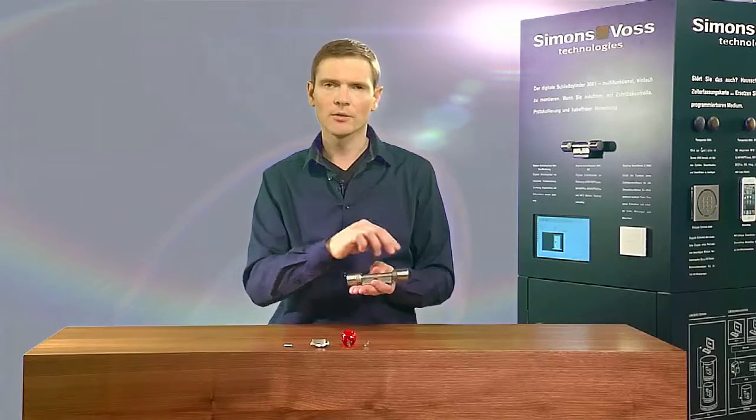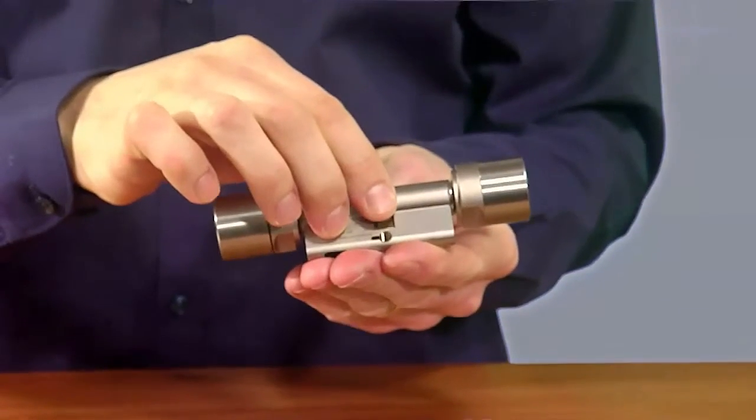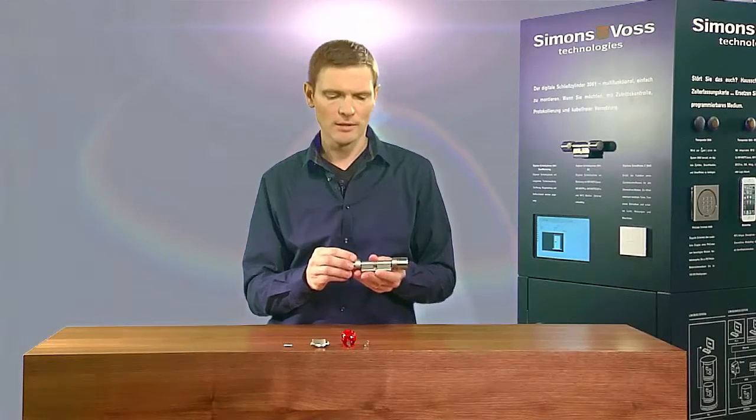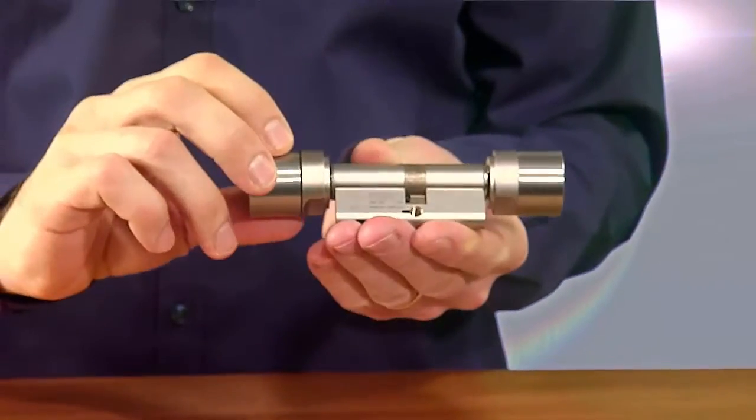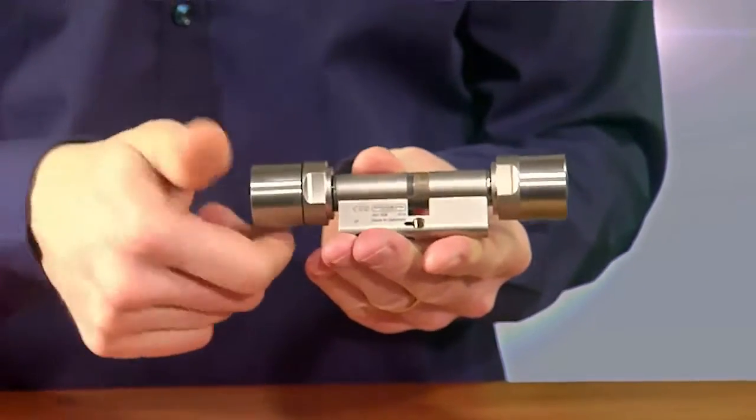The signal is then emitted to the software via the cylinder and the network interface card. I can then see the status of my door change on my locking plan. Other sensors built into the cylinder detect whether a door is open or closed.